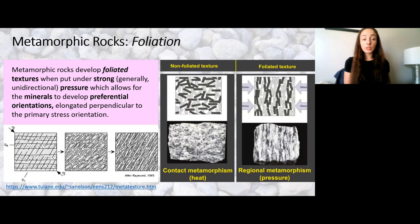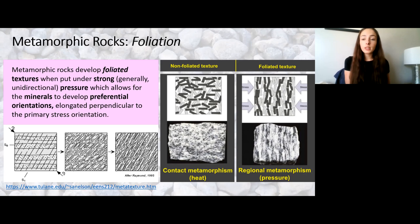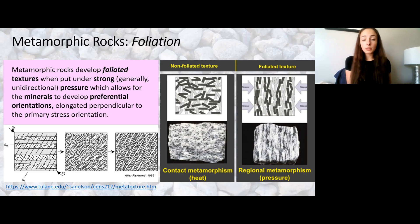Metamorphic rocks develop foliation textures because of strong pressure. You can see on the figure on the right, where it says foliated texture, that the stress arrows pointing at the rock show the direction of pressure squeezing that rock until those minerals orient themselves in an elongate pattern, forming the lines we call foliation. A rock of similar composition formed from contact metamorphism does not form that foliation, and so that's something we can use to distinguish between regional and contact metamorphism.